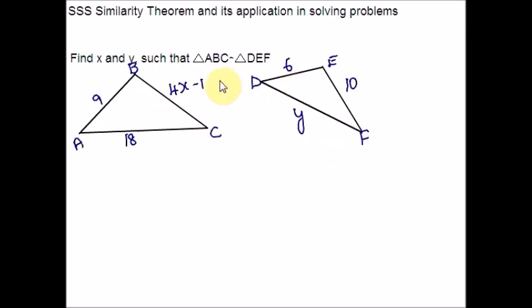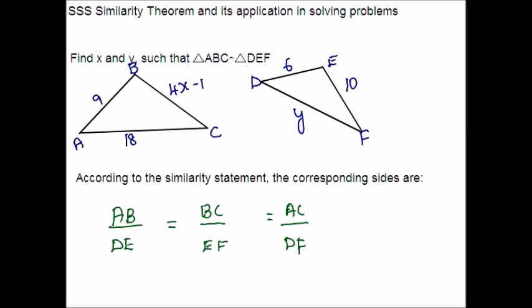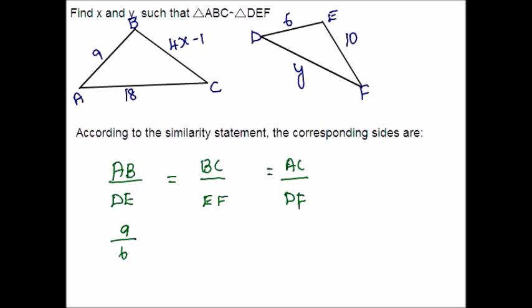In this question it says that the two triangles ABC and DEF are similar. We have to take this as a clue and find the unknown values for X and Y. According to the similarity statement, let me write the proportion for corresponding sides. We are taking the corresponding sides and setting up the proportion, then substituting the values given in the triangle: 9 over 6 equals (4X minus 1) over 10 equals 18 over Y.